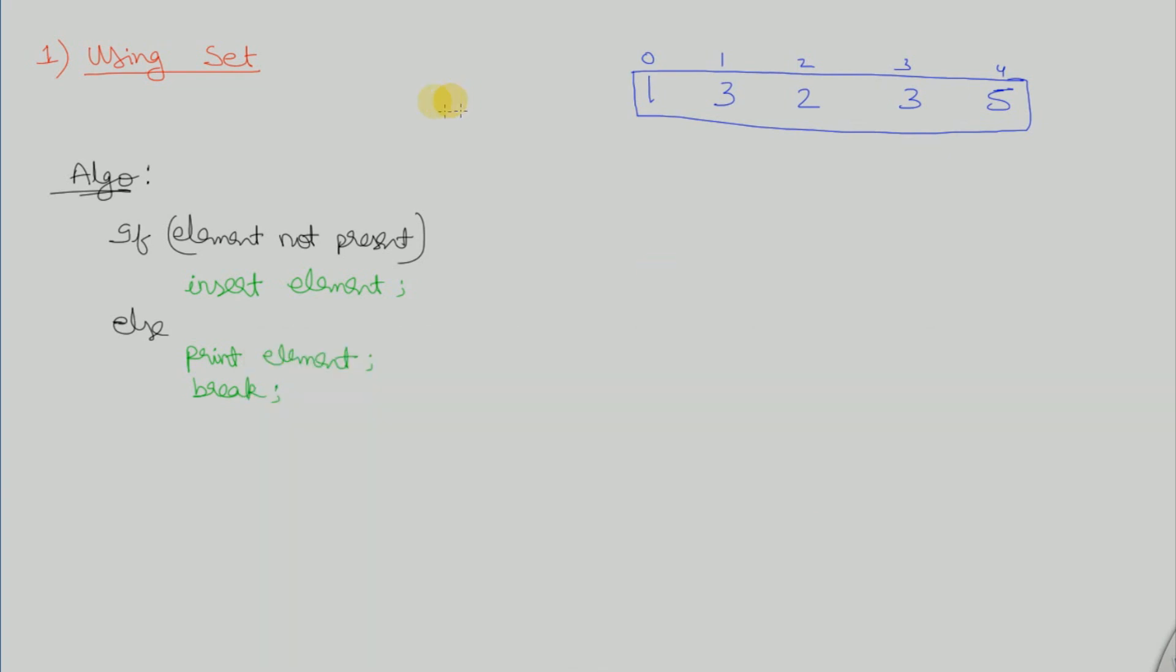I will first discuss the method using set. Suppose we have the following elements as shown: 1, 3, 2, 3, and 5. How do I find the repeating element in this array?